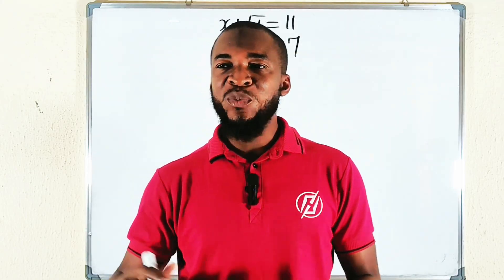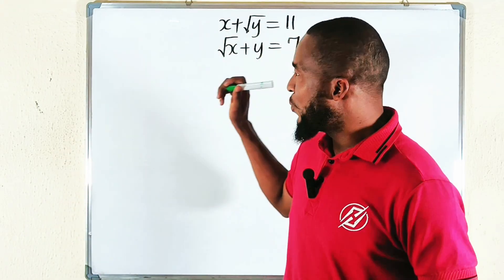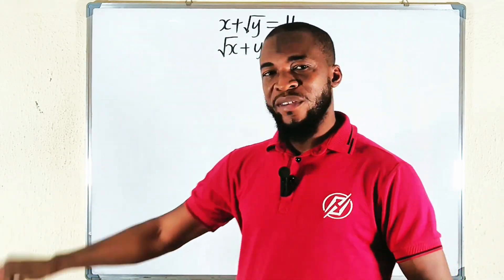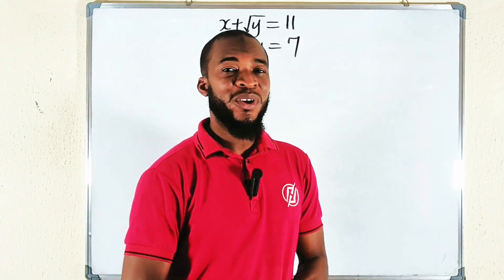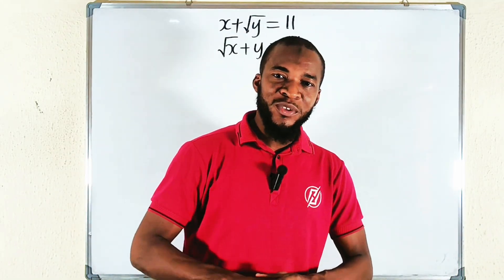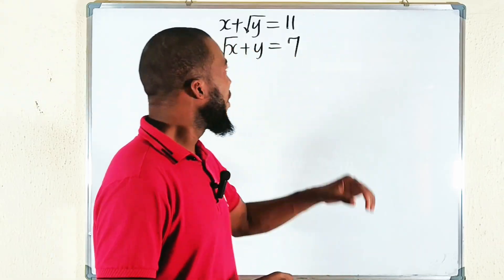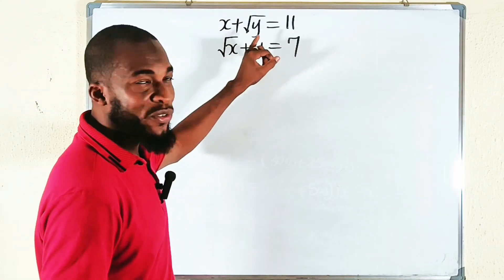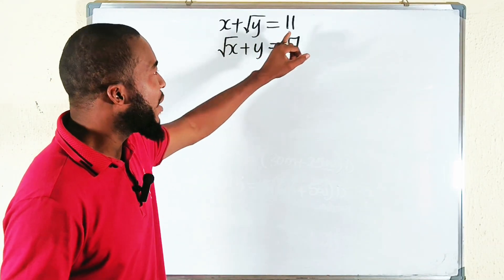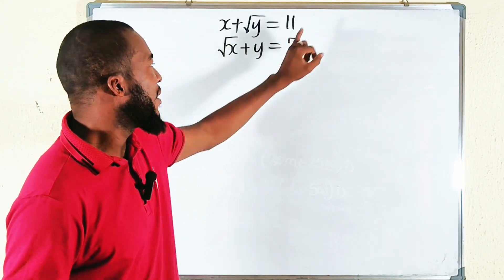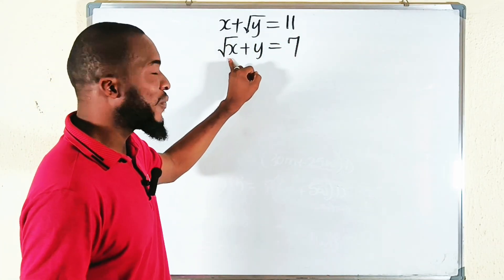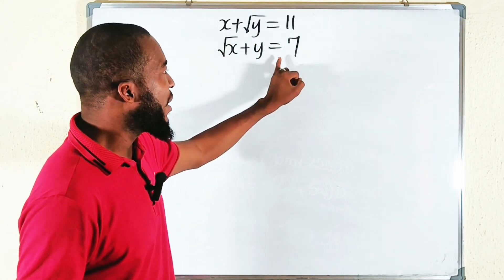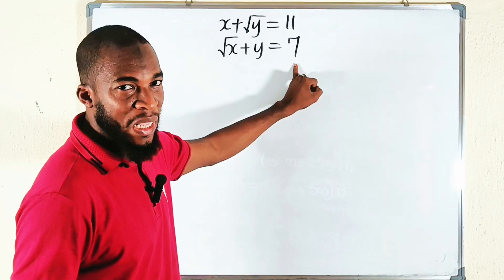Hello everyone, let us provide a solution to this interesting, famous Olympiad Mathematics question. x plus square root of y equals 11, and square root of x plus y equals 7.